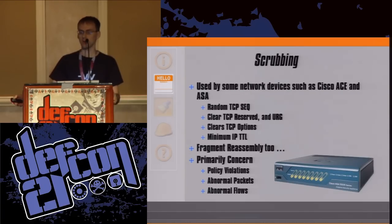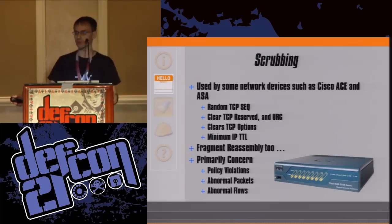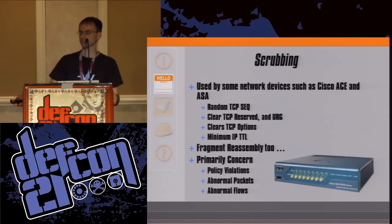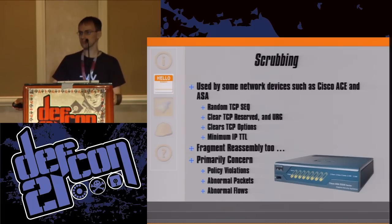Then there are a variety of networking devices such as the Cisco ACE and Cisco ASA. They throw in some other scrubbing options: randomizing the TCP sequence number, clearing the TCP reserve field and urge fields, clearing some TCP options and enforcing a minimum IP time to live — also some fragment reassembly. The primary concern is policy violations, abnormal packets and abnormal flows. As with the others, there's scrubbing with some normalization, but not enough nor the right kind. Not effective for fingerprinting prevention and not practical — they are perimeter devices, lacking the ability to cover the entire network.